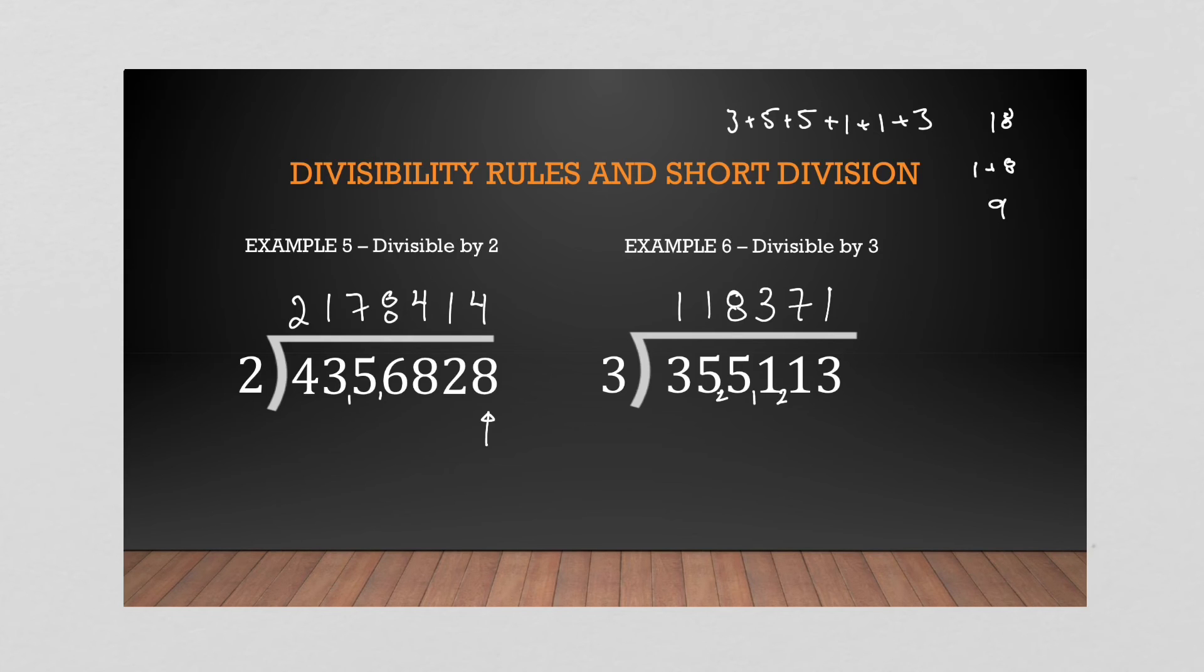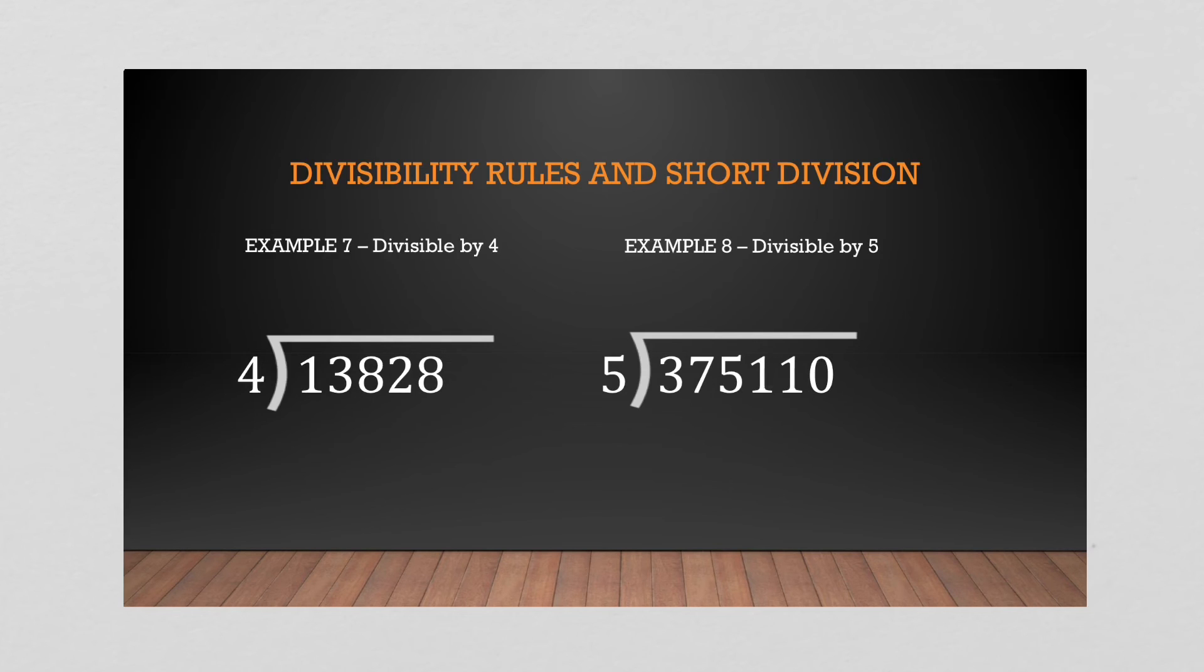So how about divisible by 4? Well, are those two numbers divisible by 4? Yes. 28 divided by 4 is 7. So 4 goes into 13, 3 times, 1 remainder. 4 goes into 18, 4 times, 2 remainder. 4 goes into 22, 5 times, 2 remainder. And we get 28, so 7.